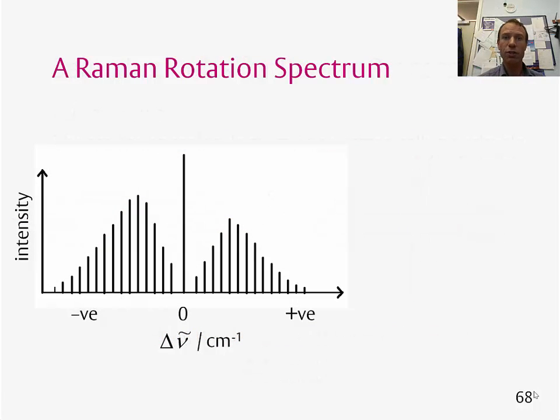So we have a Raman rotation spectrum which will look like this. We've got an intense Rayleigh peak. This is where delta J is equal to zero, and this is in the middle of the spectrum. You'll notice in Raman spectra we often have the change in wavenumber across the x-axis rather than a wavenumber. And this is because we're looking at changes in energy with respect to the original incoming photon.